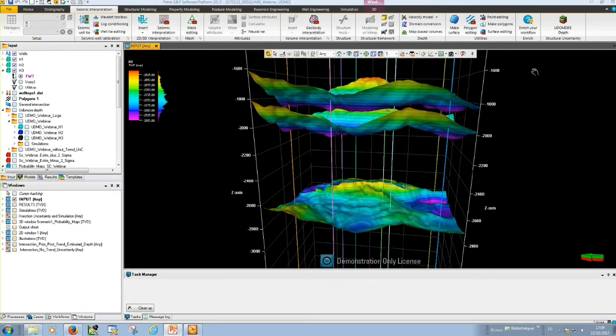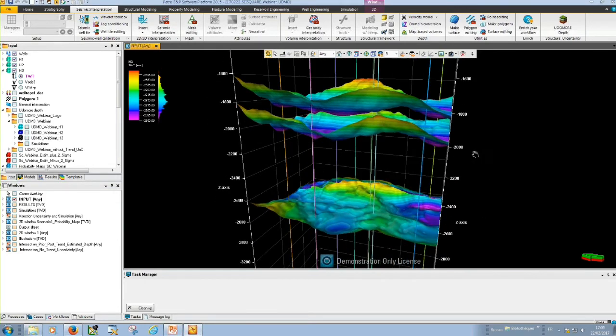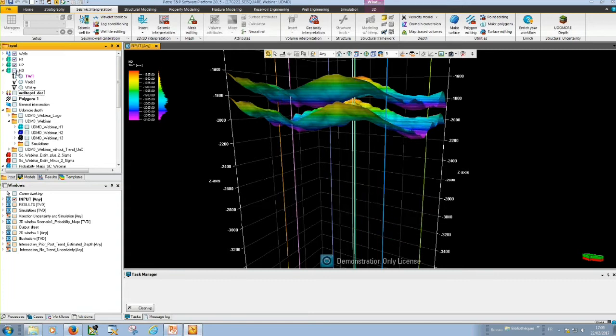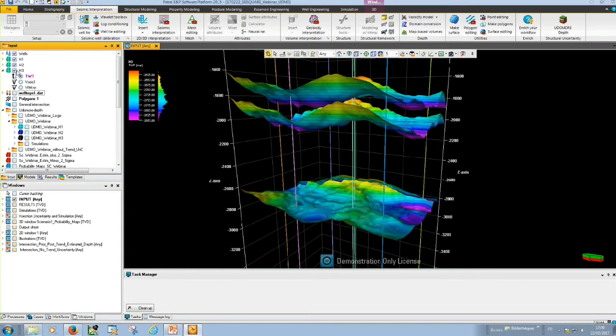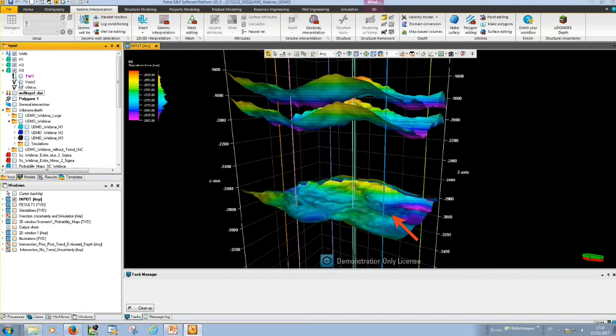Here, you could see a scenario with which we are going to work. We have three layers. Layer 1 and layer 2 are quite shallow. And layer 3 is our target layer. In UdomoDepth, you could also use well depth markers and seismic velocity. Let's go to UdomoDepth.